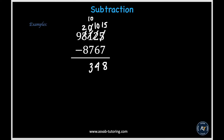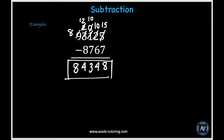Going on to the thousands place, we have 2 minus 8. And because 2 is less than 8, we'll have to borrow a 10 to make it a bigger number. We'll borrow that 10 from the 9, so this 9 will become an 8 and this 2 will become a 12. And so 12 minus 8 is equal to 4. And then we have this leftover 8 in the ten-thousands place. So our final answer turns out to be 84,348.